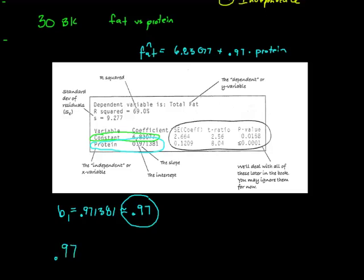The confidence interval will be 0.97 plus or minus. A couple of things. First thing, I need a t star. Well, remember, 30 sandwiches, 30 minus 2 gives me 28 degrees of freedom.